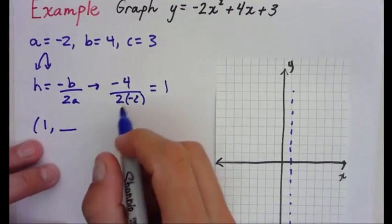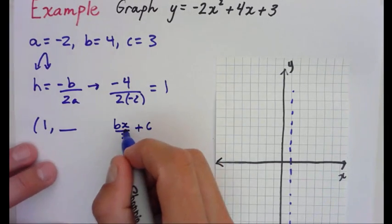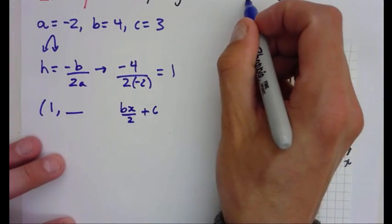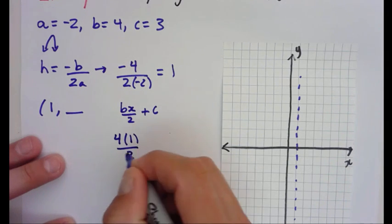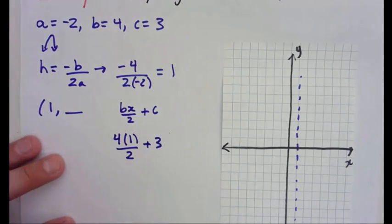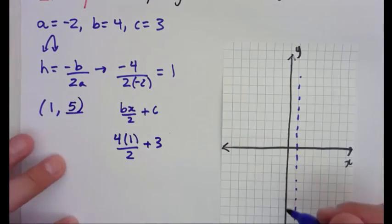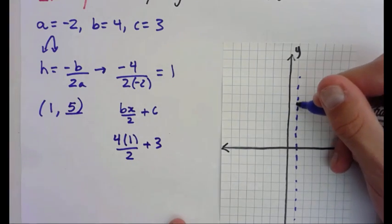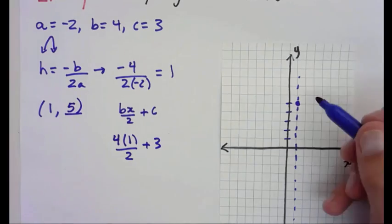Now I need my k value. k is bx over 2 plus c, where x is the h coordinate, which is 1. So we have 4 times 1 over 2, which is 2, plus c, which is 3. That gives 4 over 2 equals 2, and 2 plus 3 is 5. So my vertex is (1, 5). We go over 1 and up 5 on the graph. Now my parabola is going to open down.